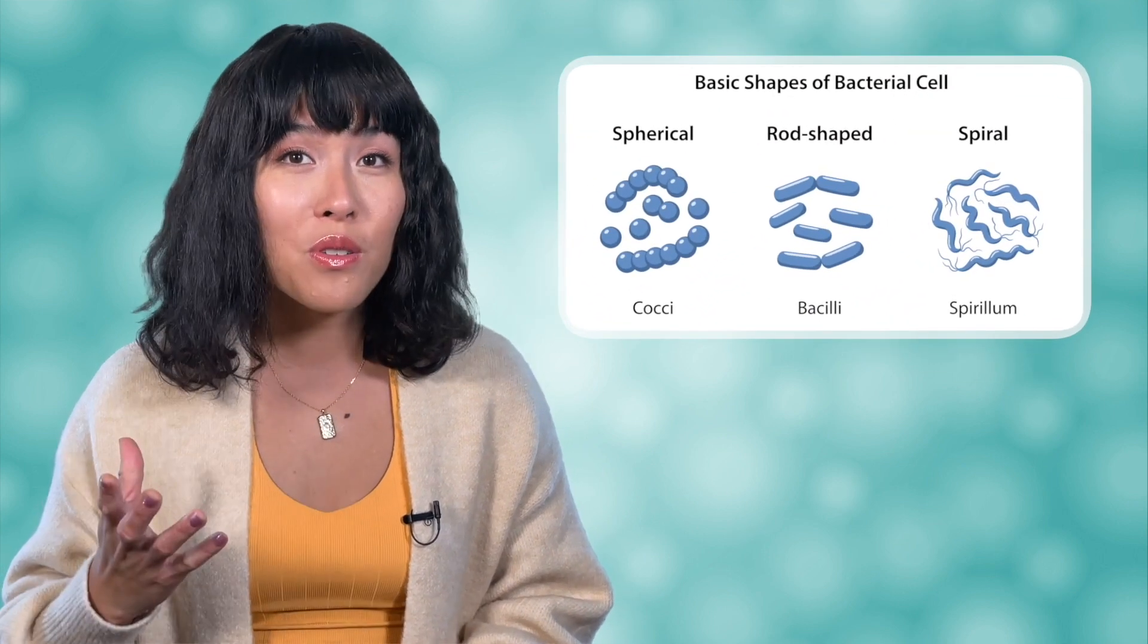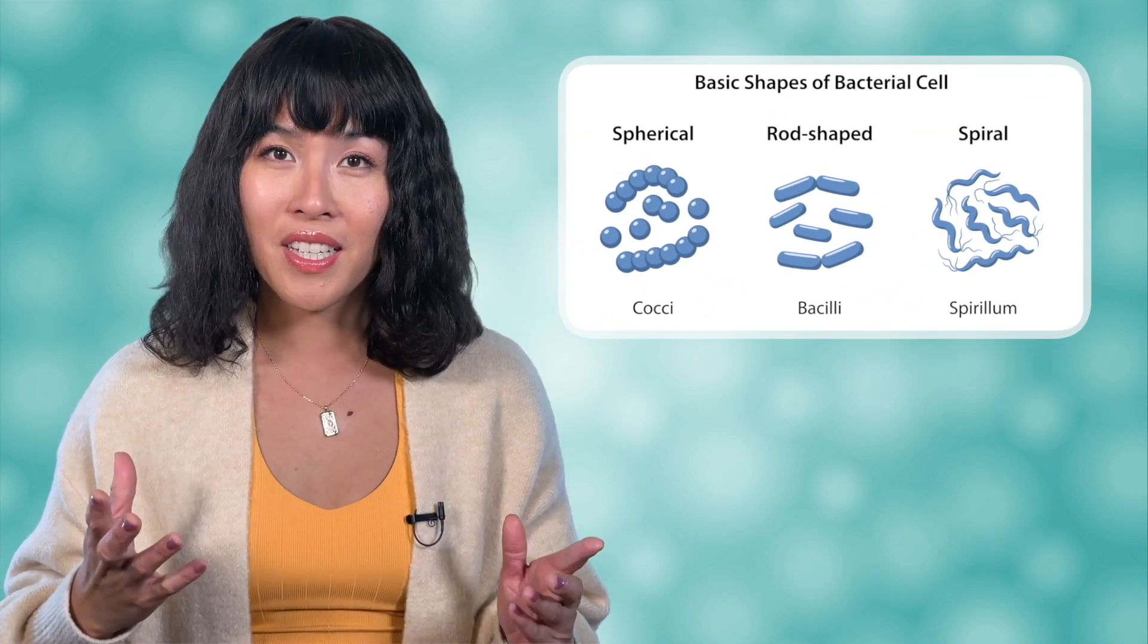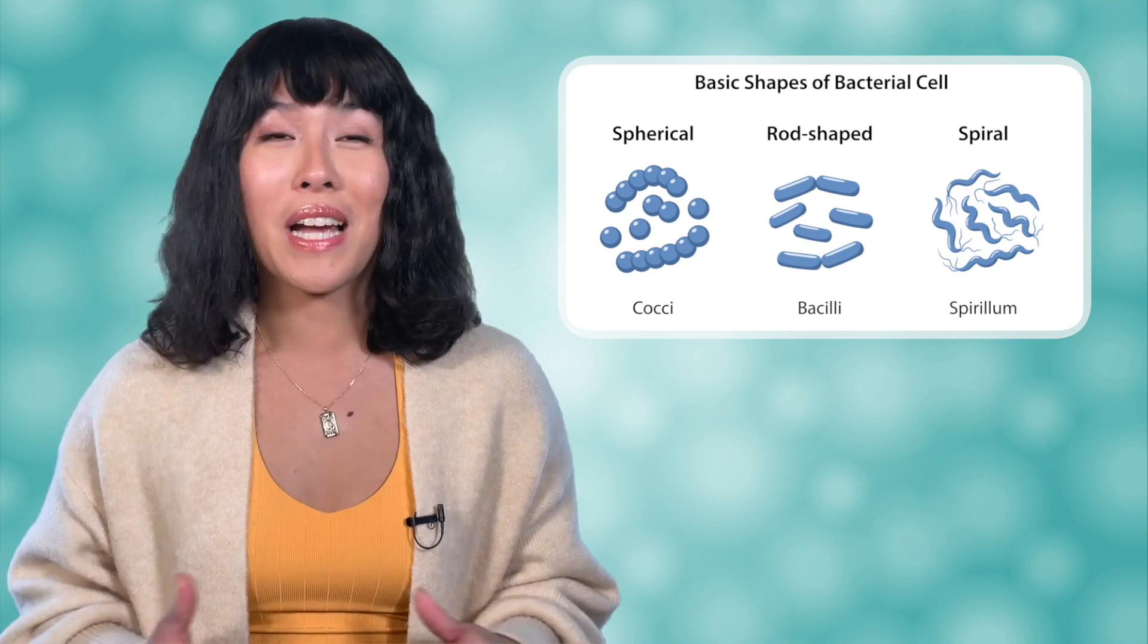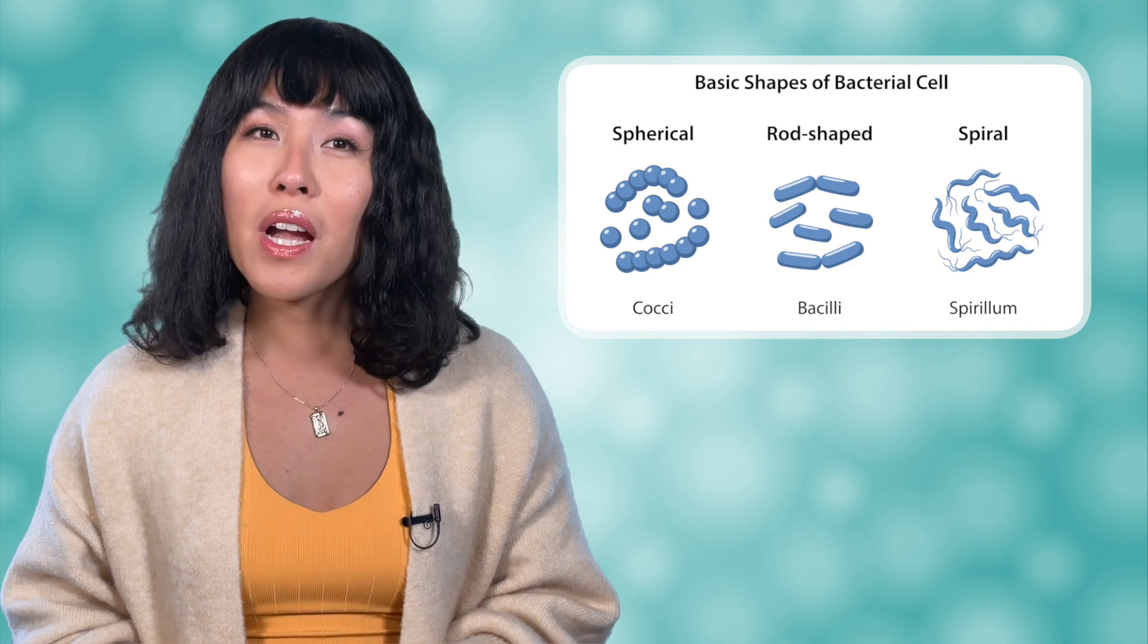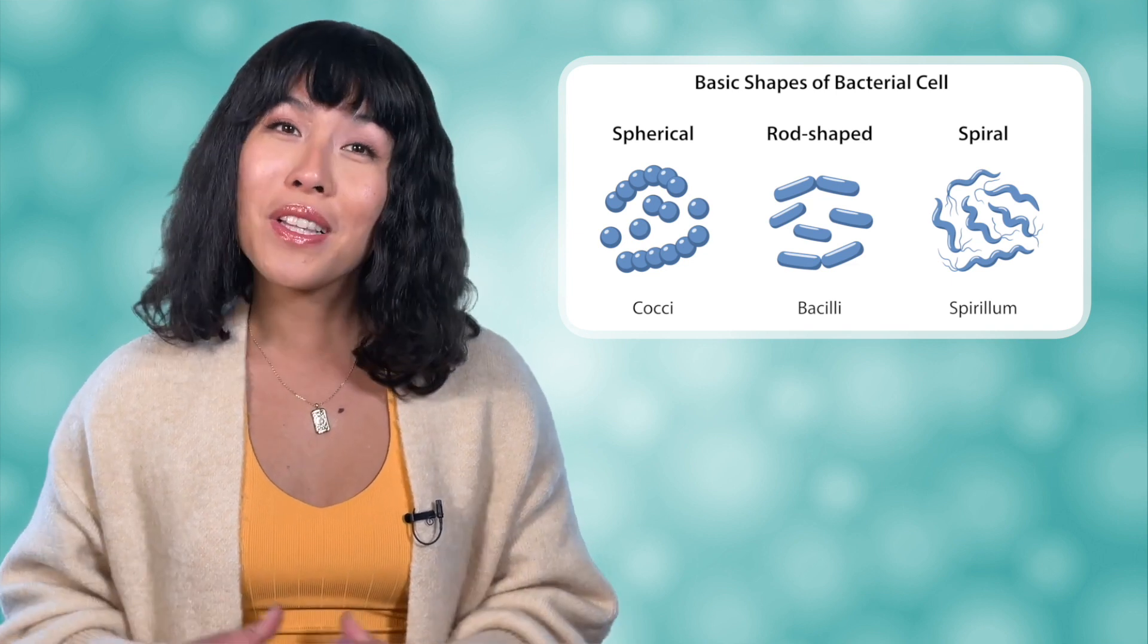One of the easiest ways to classify bacteria is by their shape. When seen under a microscope, most bacteria appear as either spheres, rods, or spirals. Spherical or round bacteria are known as cocci. Rods are called bacilli, and spirals are referred to as spirilla.